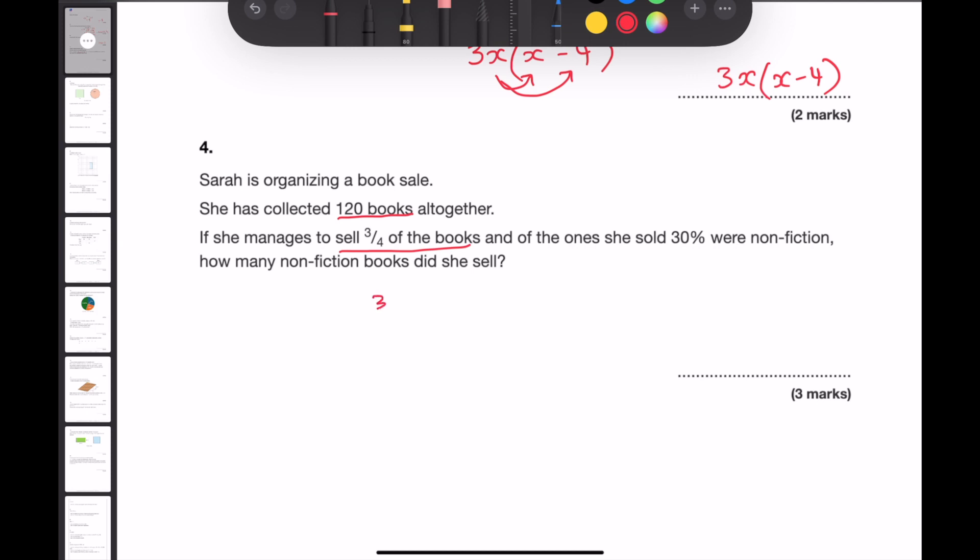So the first thing we need to do is find 3 quarters of 120. Of meaning times, means I can now do 3 quarters times 120. And this will give me 90.